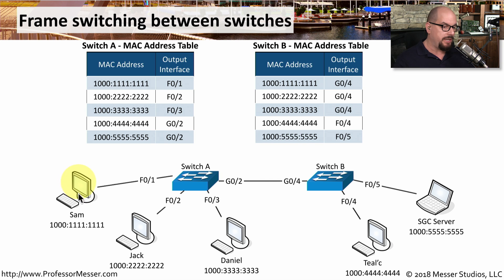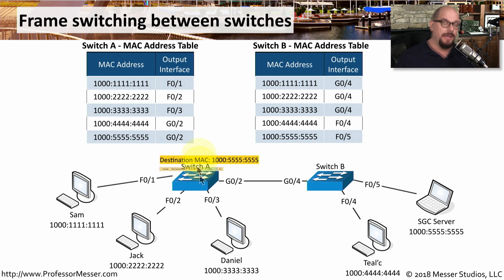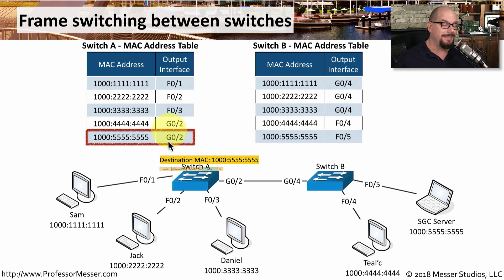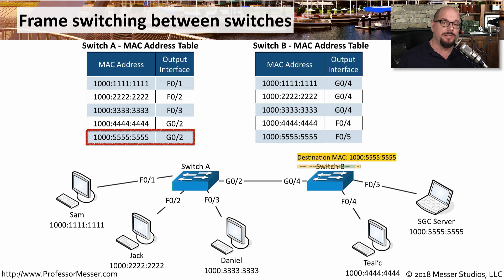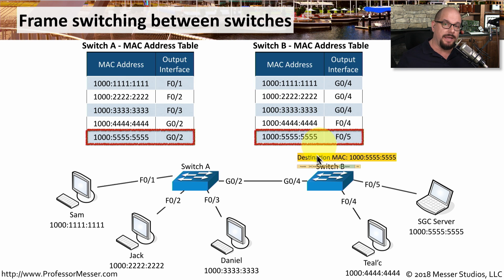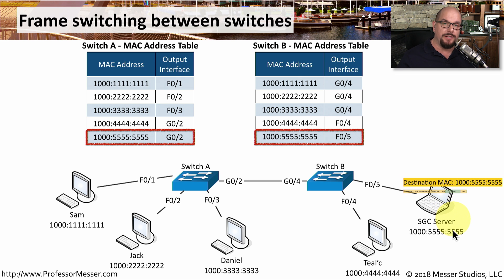Let's perform the same function where Sam is sending information over to the SGC server. Sam will put a frame on the network with the destination MAC address 1000-5555-5555, and it goes to Switch A. In all of these situations, the switch only knows where the next step is to forward this frame. Switch A will look through its MAC address table, find a match for that destination MAC address, and see that the output interface is on the gigabit network, slot A, port number two, and simply sends that frame out to that interface. Switch A has no idea what the next step is going to be. That's OK, because Switch B has now received that frame and will look through its own MAC addresses to find a match — it's found a match to send this frame to fast ethernet slot 0, interface number 5, to reach the SGC server.